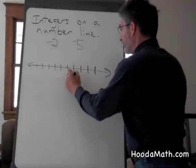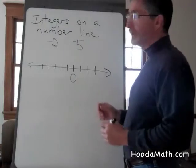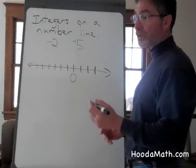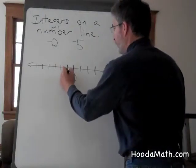If zero is on the number line here, negative two is smaller than zero and is two units to the left of zero. One, two.